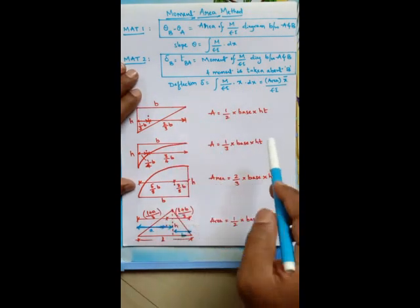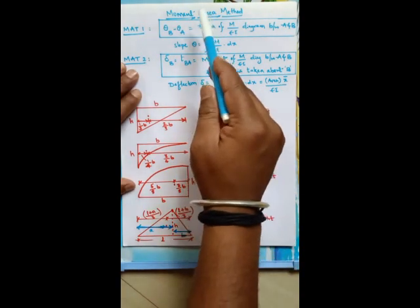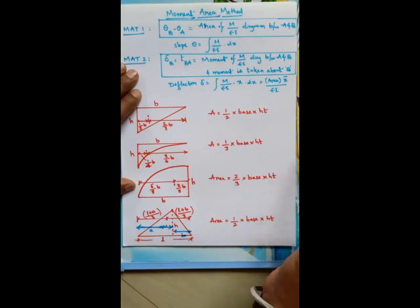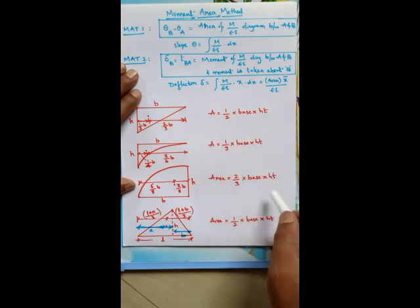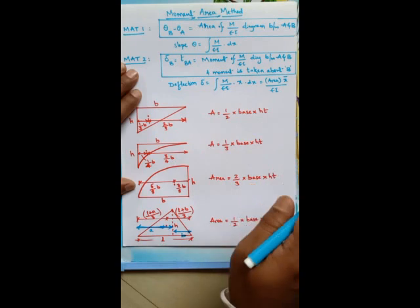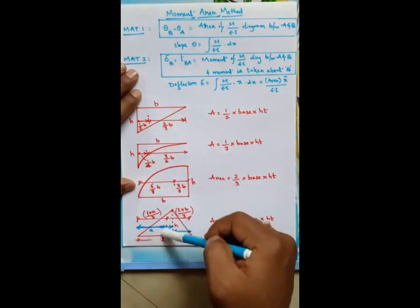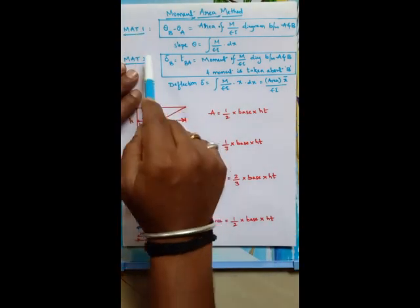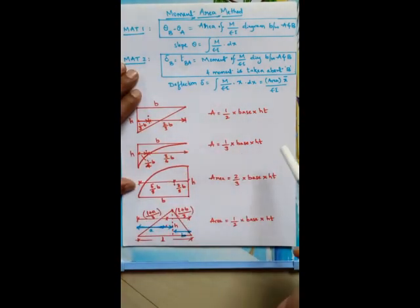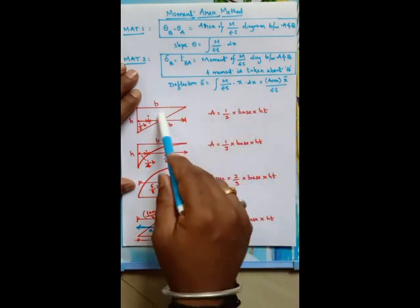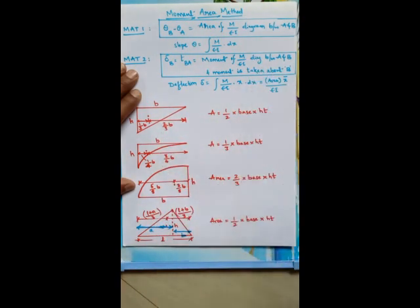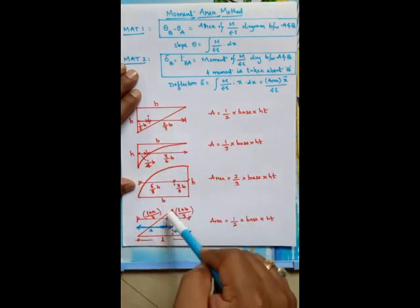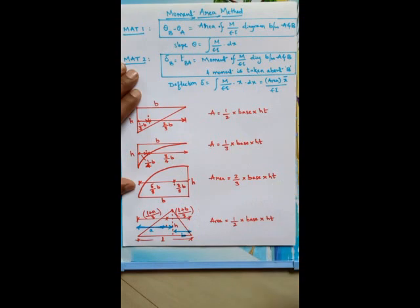These are the standard figures one should know when dealing with the moment area method and the conjugate beam method. Both are called semi-graphical methods because they use graphical representation of M/EI diagrams along with the calculations from moment area theorems 1 and 2. You should know the areas of bending moment diagrams when solving problems for determinate beams.